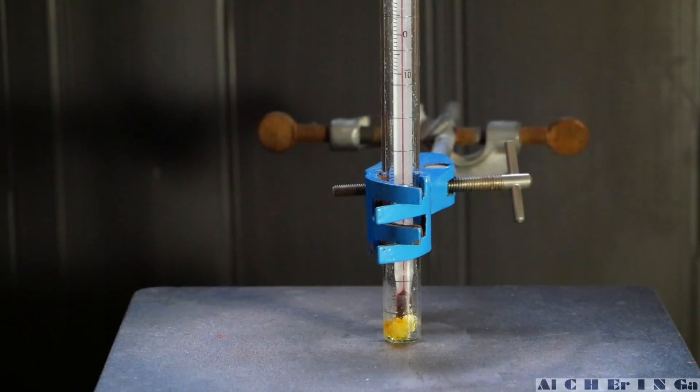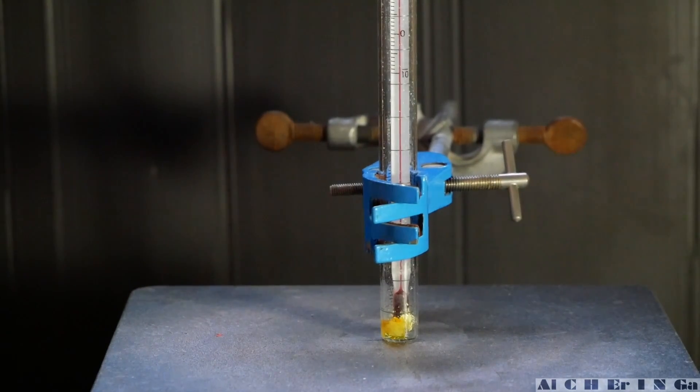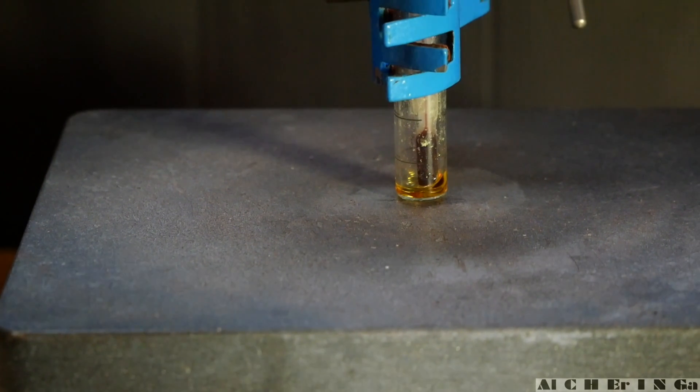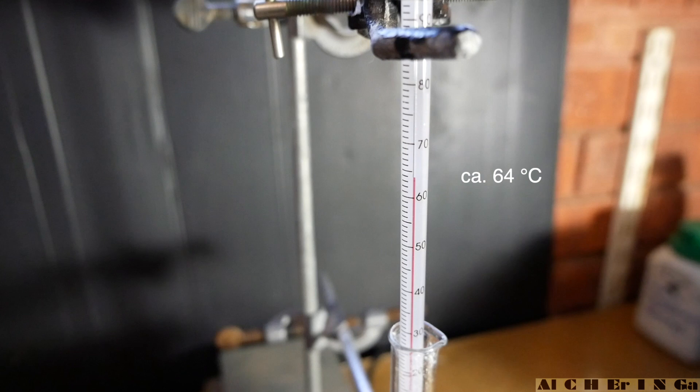After a short while, we see the crystals starting to melt at around 60 degrees Celsius. Then we see that all of the crystals have melted at around 64 degrees Celsius.